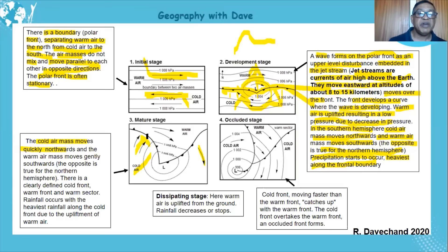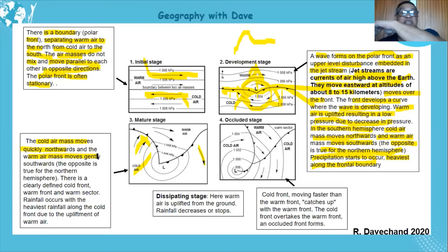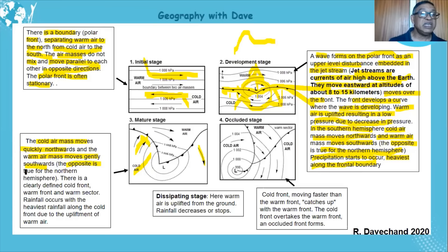The fronts meet at the apex at the low pressure. Cold air moves quickly northwards, forcing the warm front southwards. The warm front moves gently because the pressure gradient is steeper at the cold front — it's cold and dense — so it moves faster. The gradient at the warm front is more gentle, resulting in slower movement.